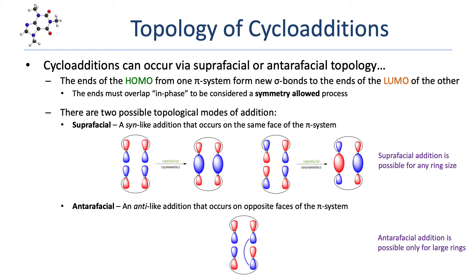Here we see the two possible forms of suprafacial addition. The first diagram shows the reaction of two symmetric molecular orbitals. The upper molecular orbital is added to the top lobe on the right end and the top lobe on the left end of the lower molecular orbital. Because both ends are adding to the same top face, the reaction is suprafacial. The second diagram shows the reaction of two asymmetric molecular orbitals. Again, the upper molecular orbital is added to the top lobe on the left end and the top lobe on the right end of the lower molecular orbital — again suprafacial. In contrast, an antarafacial addition is an anti-like process in which the two bonds form on opposite faces of the pi system. The upper molecular orbital is added to the top lobe on the left end but to the bottom lobe of the right end of the lower molecular orbital. Because the two ends are adding to the opposing top and bottom faces, the reaction is antarafacial.